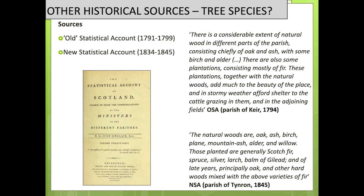One of the limitations of the estate maps is that very often they don't say much about what type of tree species you see on the map. However, we have a lot of historical sources to complement the estate maps — the Old Statistical Account and New Statistical Account confirm that there are a lot of plantations over time. This is absolutely consistent across the whole study area. We can also have a feel for what type of species were planted and the reasons why these plantations occurred.